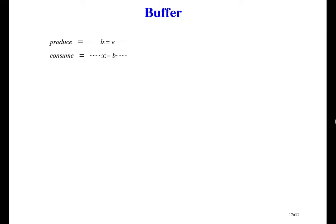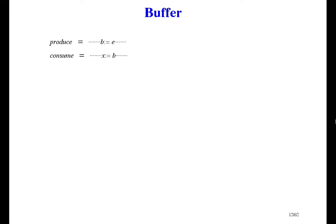Let's look at a better example: the buffer. There are two programs, produce and consume. Produce might do lots of things, but the important thing is that it assigns something to variable b, which is the buffer. Consume uses the value of variable b. Imagine b is some big data structure — produce reads files and fills in values, and consume uses those values to calculate things and print a report. They work under control of a program called control, which says: first produce, which fills the buffer, then consume, which uses the buffer, then repeat forever.